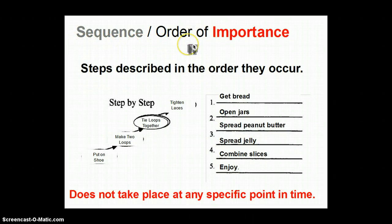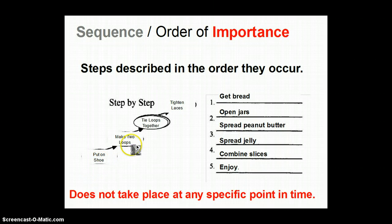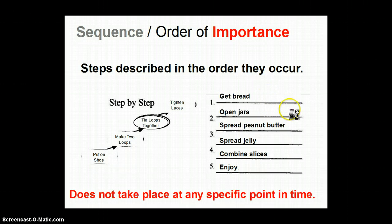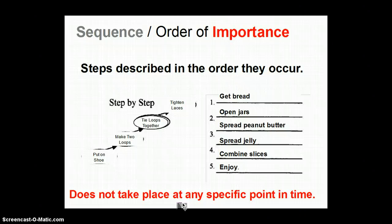The second text structure is sequential — basically a series of steps in the order they occur. It's not cause and effect; it's just sequential. For example, how you put your shoes on: you put on the shoe, make two loops, tie them together, tighten the laces. A recipe would also be sequential — like a peanut butter and jelly sandwich: get the bread, open the jars, spread the peanut butter, spread the jelly, combine, and enjoy. Time is not important in a sequential structure; it's just that the steps have to be in the proper order.